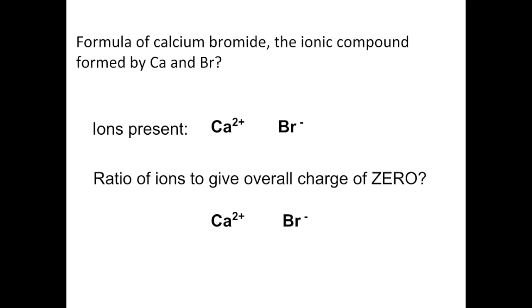So if you look at it as it is, if you just had one calcium ion for every bromide ion, the charge wouldn't cancel, because you've got a 2 plus charge and a 1 minus charge. So you need, for every calcium ion, you need 2 bromide ions. So that will give you an overall 2 minus charge which will cancel the 2 plus charge. And so the formula of calcium bromide is CaBr2.